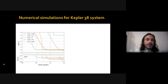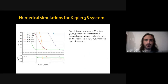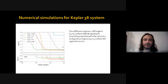Here I show a numerical simulation for the circumbinary planet Kepler-38, plotting the spin of the planet as a function of time for different relaxation factors—normalized by the mean motion—shown in different colors. We observe two different regimes: the stiff regime, where the relaxation factor is lower than the mean motion and tidal dissipation is inversely proportional to the viscosity, and the gaseous regime, where the relaxation factor is greater than the mean motion and the opposite occurs for tidal dissipation.